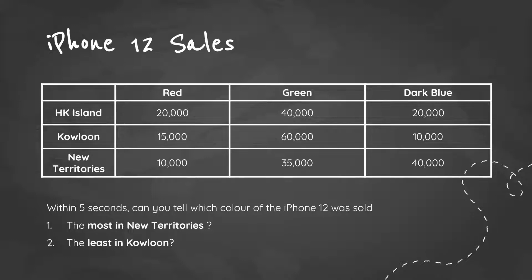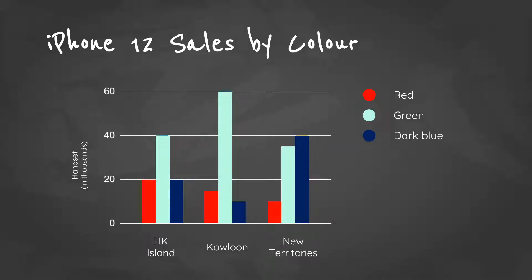But what if we visualize it? Here we see a bar chart for iPhone 12 sales by color. The colors of the bars represent the color of the iPhone 12. Now, we can easily tell that dark blue was sold the most in New Territories, but the least in Kowloon.